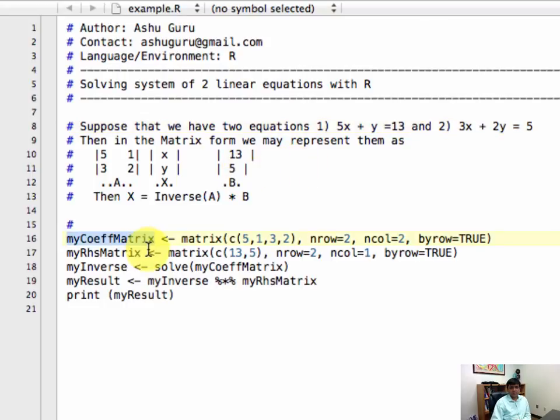With R, I am defining a variable and calling it myCoeffMatrix, and I am assigning the value by calling a function matrix and sending the variables 5, 1, 3, 2.